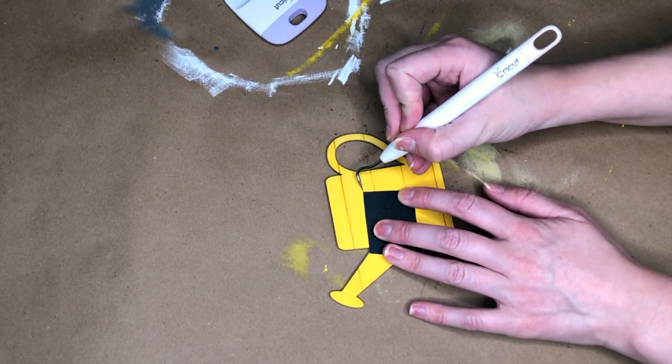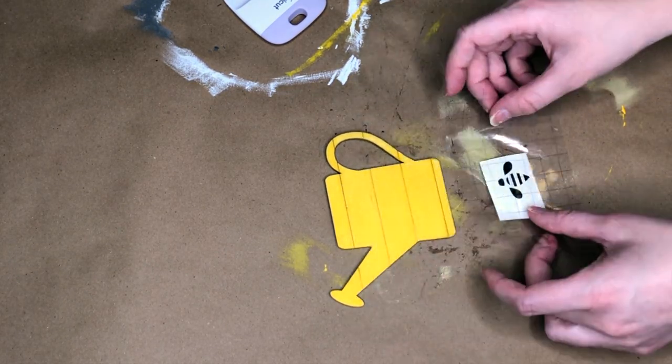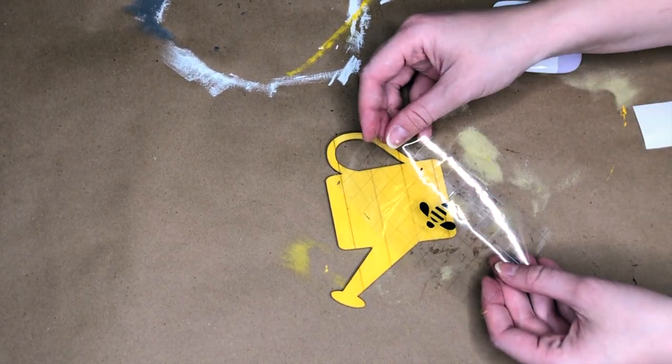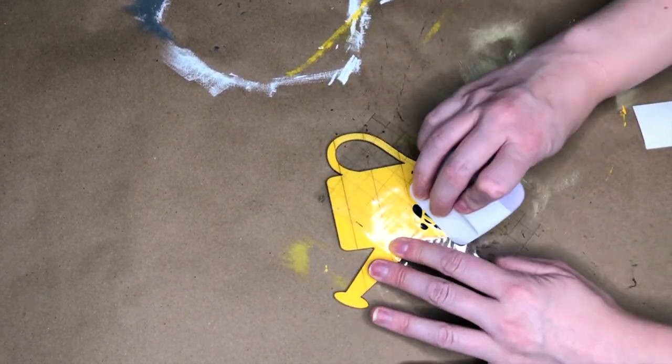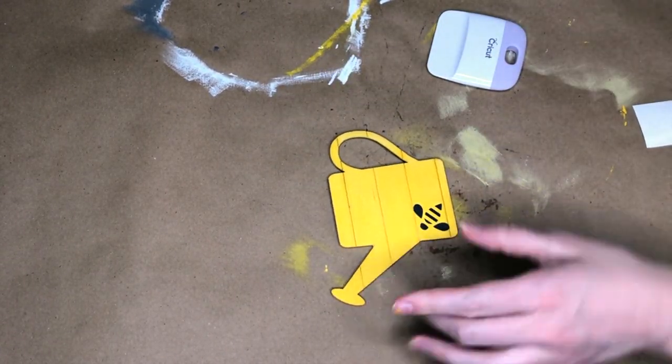Besides the color I wanted to add another bee element so I used my Cricut to cut out a small black bee decal and I went ahead and burnished that onto my transfer tape and transferred it on to the bottom left corner of our watering can.